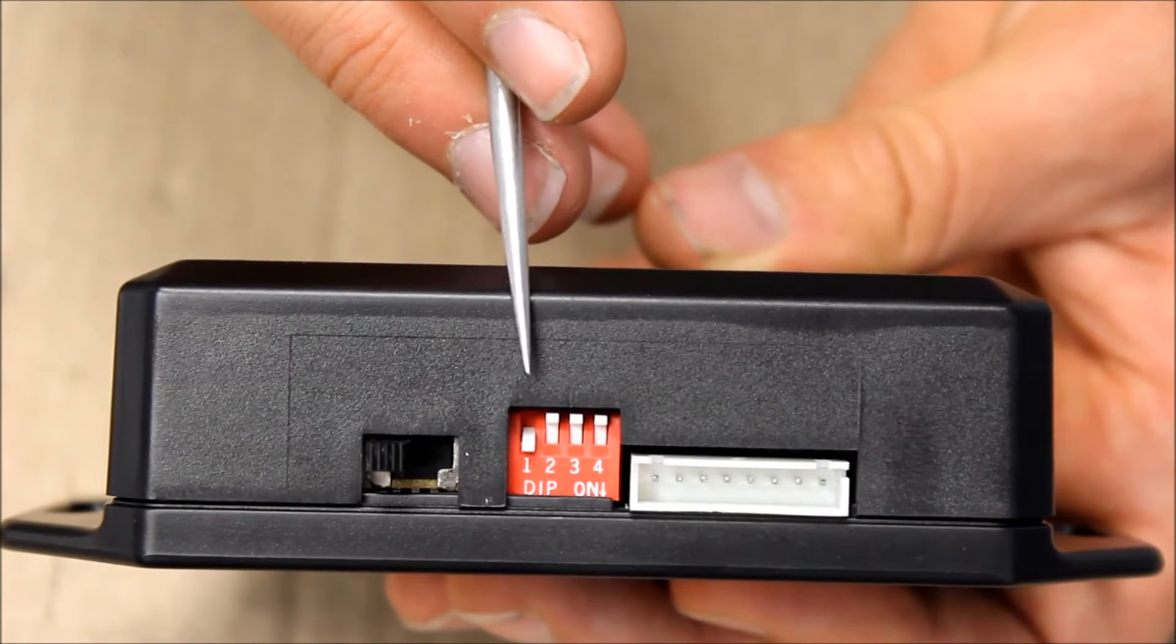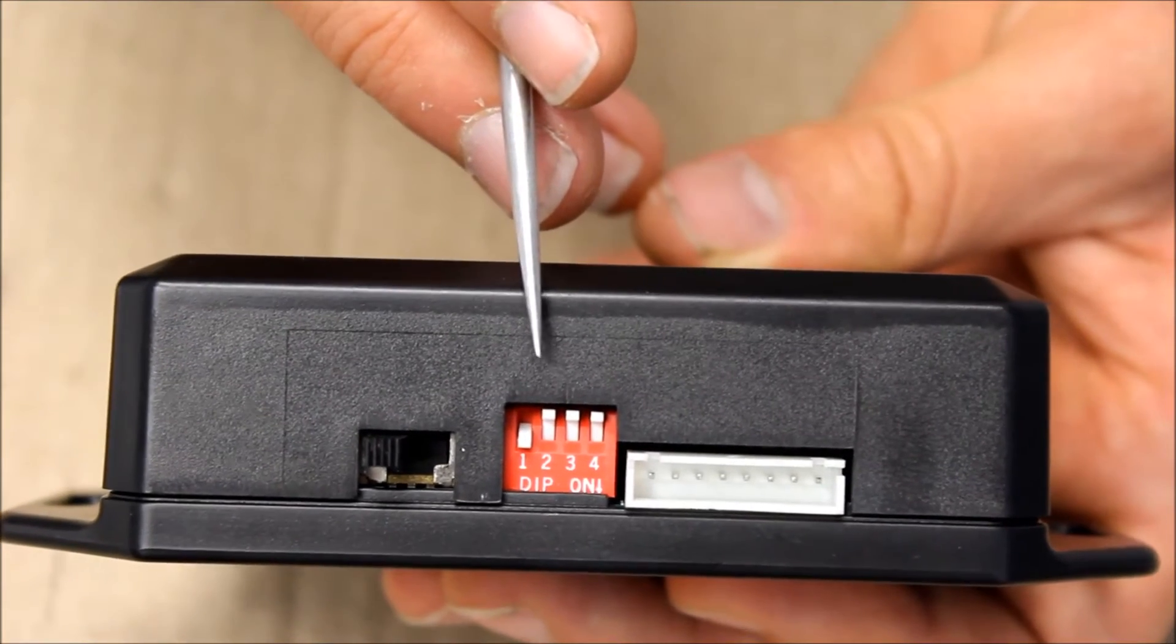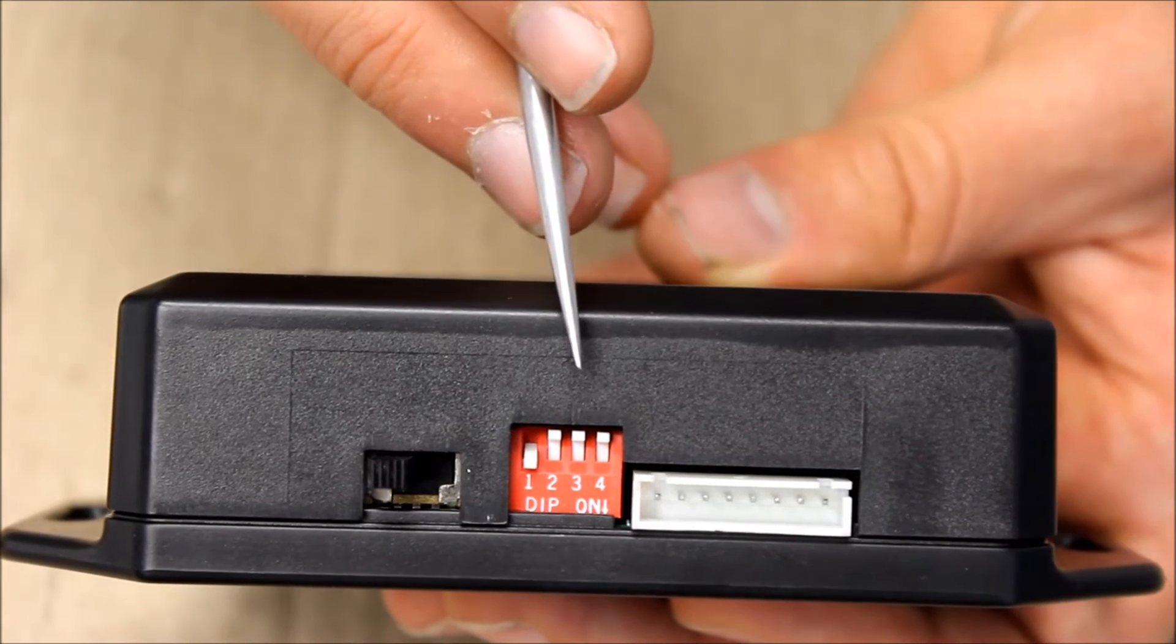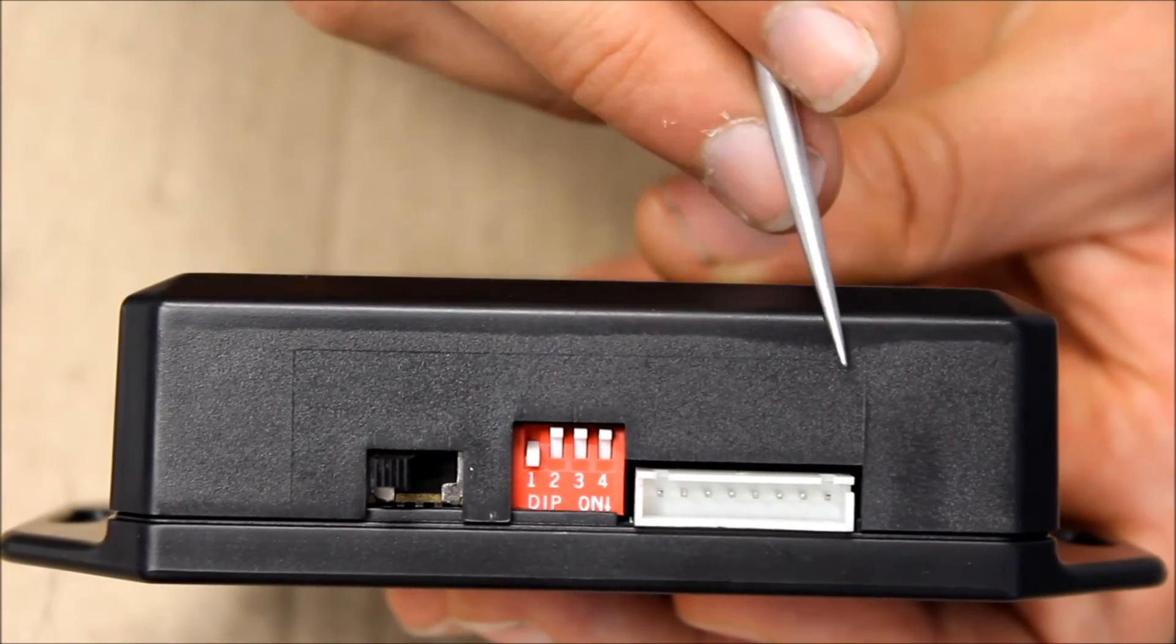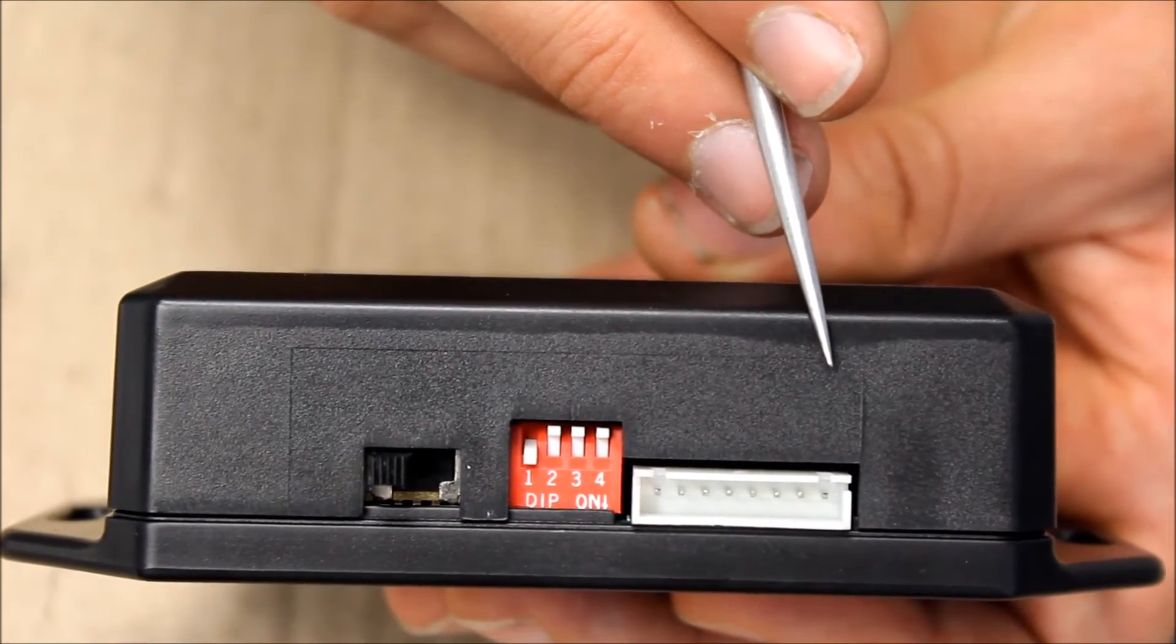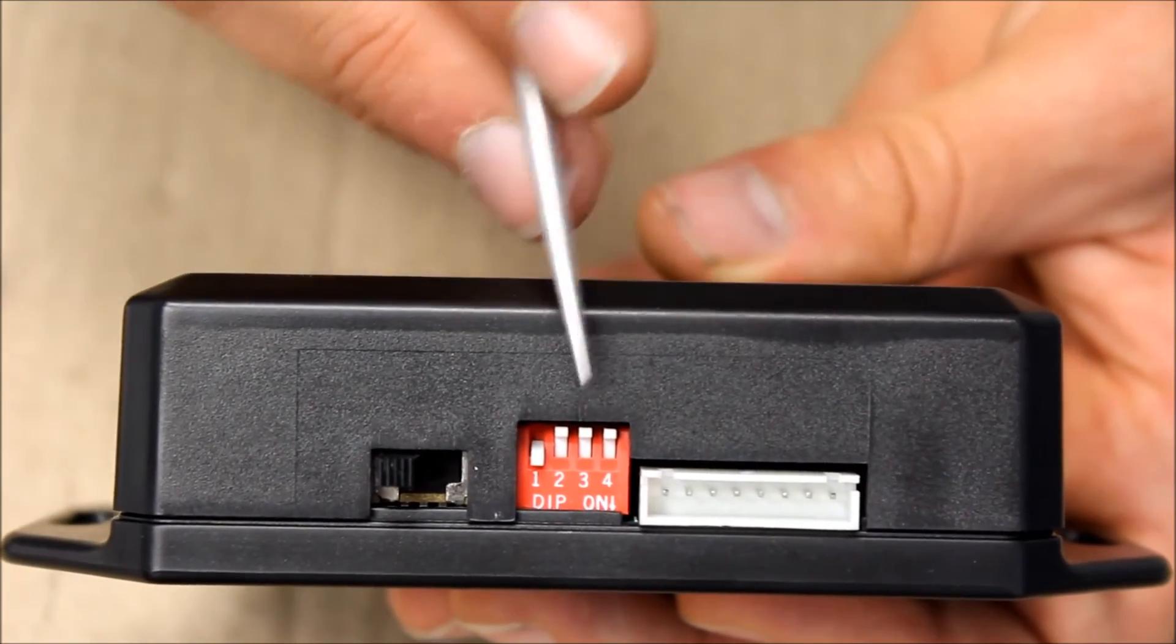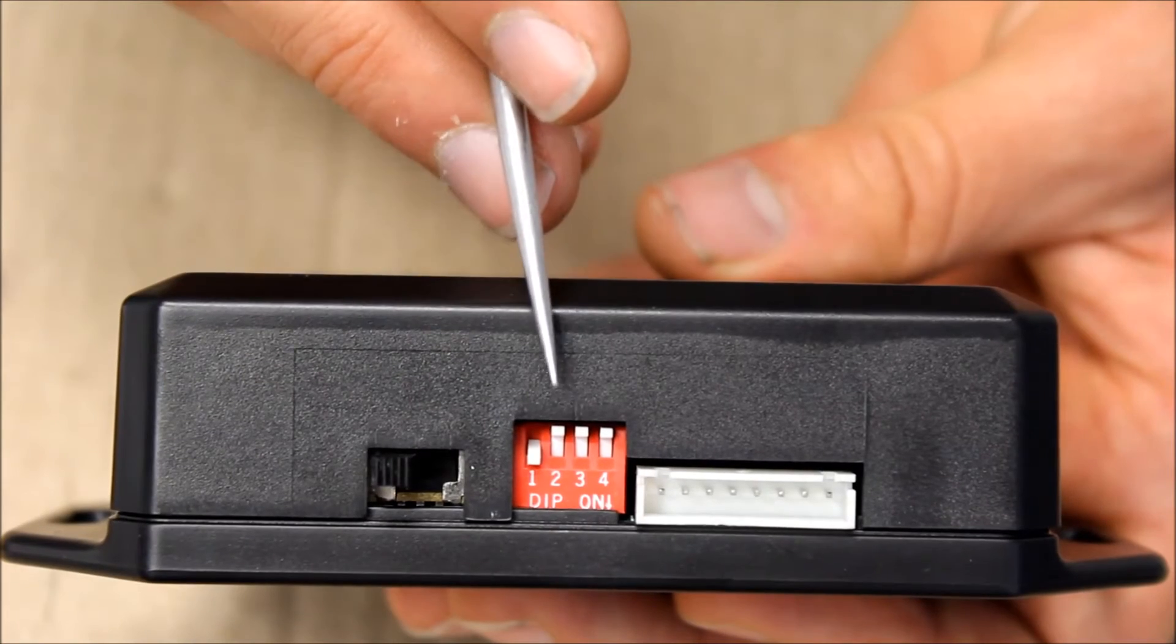The second switch controls whether the actuator moves when the ignition is cycled from 12 volts to ground. If the switch is on, then the actuators will move to position 1 when 12 volts is removed, and position 2 when 12 volts is reapplied. If the switch is off, then this feature is disabled.